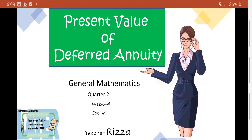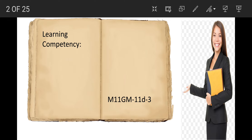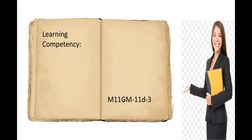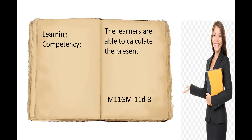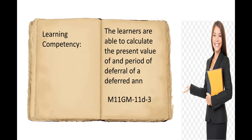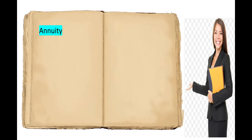Good day, Grade 11! This is Teacher Riza, and this is our Lesson 8 for Week 4 of Quarter 2 in General Mathematics — the present value of deferred annuity. Our learning competency for this lesson: the learners are able to calculate the present value of and the period of deferral of a deferred annuity.